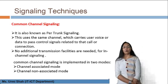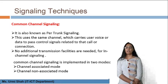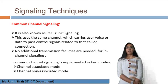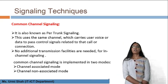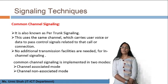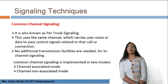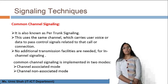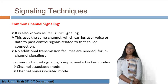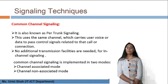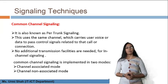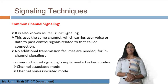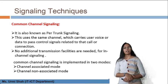The next type is common channel signaling. Common channel signaling is implemented in two modes: channel-associated mode and channel non-associated mode. These are the two different types of common channel signaling and it is widely used in telecommunication networks.